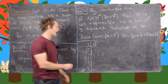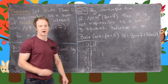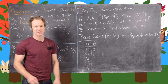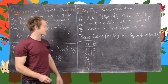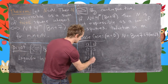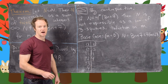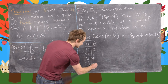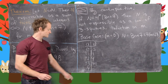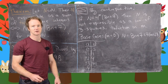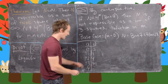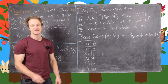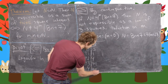If a is 0, then a squared is 0 mod 8. If a is ±1, then it's 1 mod 8. If a is ±2, then it's 4 mod 8. If a is ±3 mod 8, then a squared is 9 mod 8, but 9 is congruent to 1 mod 8. And if a is congruent to 4 mod 8, then a squared is congruent to 16 mod 8, and 16 is congruent to 0 mod 8.